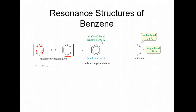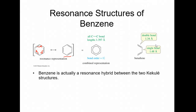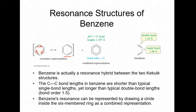These slides are from the publisher, showing bond lengths. A normal sigma bond would be about 1.43 angstroms, but all of the bond lengths in benzene are a little bit less than 1.4. A single bond is 1.48 and a double bond is 1.34 — these are right in the middle. If you average 1.34 and 1.48, you get about 1.39. So benzene is actually a resonance hybrid between the two Kekulé structures. The C-C bond lengths of benzene are shorter than typical single bonds, yet longer than a typical double bond. The resonance can be represented by a circle inside a six-membered ring.